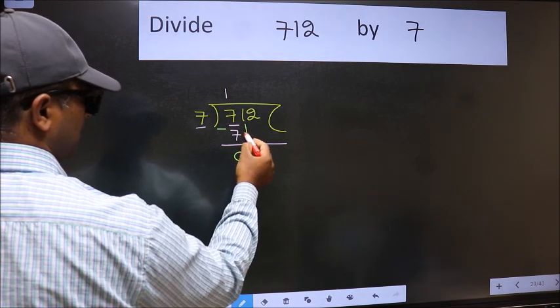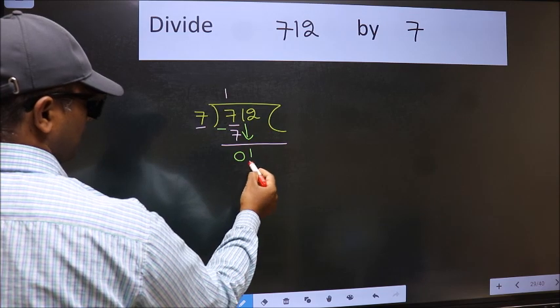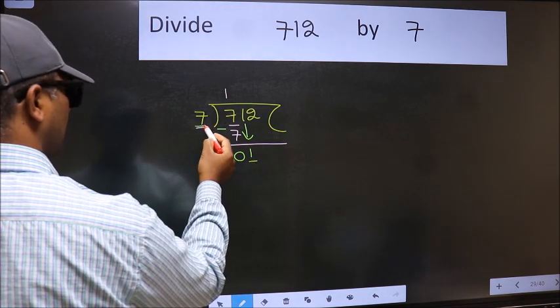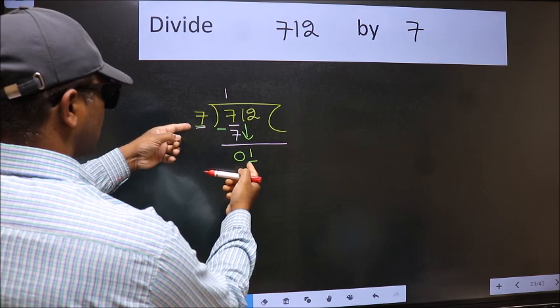After this, bring down the beside number. So 1 down. Now here we have 1 and here 7. 1 is smaller than 7.